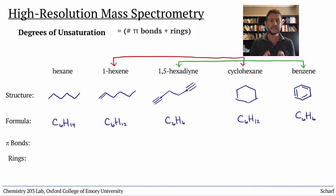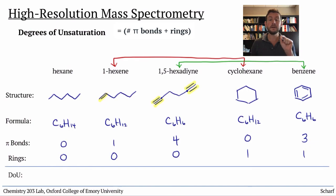Now let's examine how many pi bonds and rings each molecule has. None of either for hexane. One pi bond in hexene. Four total pi bonds in the alkyne. Remember that a triple bond is made of one sigma and two pi bonds. No pi bonds but one ring in cyclohexane, and three pi bonds and one ring in benzene. Can you see that the constitutional isomers have the same sum of rings and pi bonds?